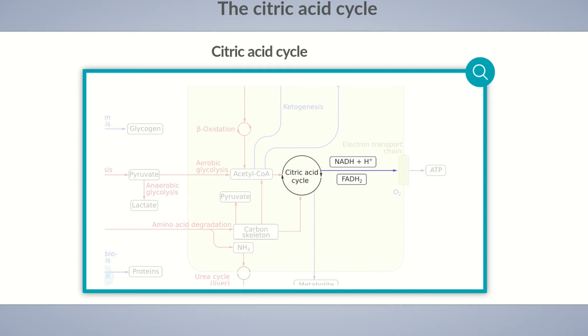For this purpose, substrates such as acetyl-CoA, oxaloacetate, succinyl-CoA, fumarate, and malate are broken down into carbon dioxide. These molecules are formed especially during aerobic glycolysis and beta-oxidation, but also during amino acid degradation.